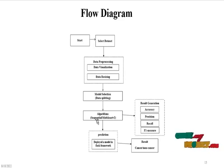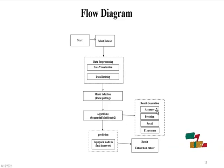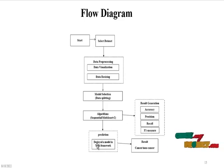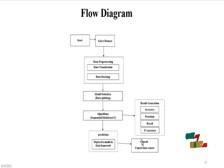We apply two algorithms: the CNN Sequential model and the MobileNet V2 model. After training, we evaluate using the performance metrics: accuracy, precision, recall, and F1 score. Finally, we deploy the model using the Flask framework, where the user provides an input image and receives a prediction of cancer or non-cancer.